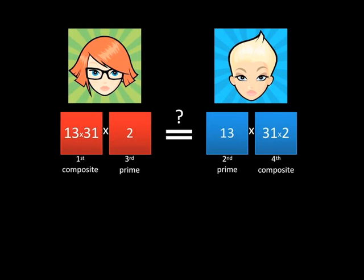It looks like blue is going to win this one — and every one. But not so fast. This analysis works when the composite is broken down explicitly as 13 times 31, making it easy for the blue team. But it's not nearly as easy if the red team says 403 instead of 13 times 31. Finding that 13 is a factor of 403 is awkward.